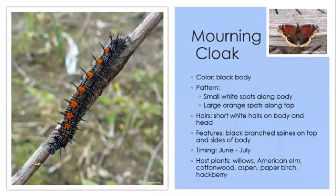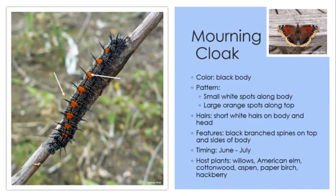The mourning cloak caterpillar is striking and relatively easy to identify. It has a black body with small white speckles all along it and large orange spots just on top of each segment. It is covered with short white hairs and black branched spines. June through July — a relatively short window — you can find them on many of our native tree species.